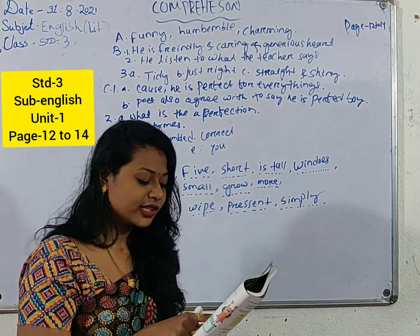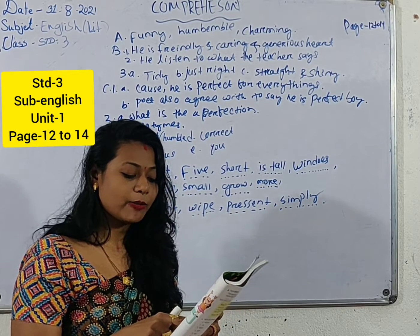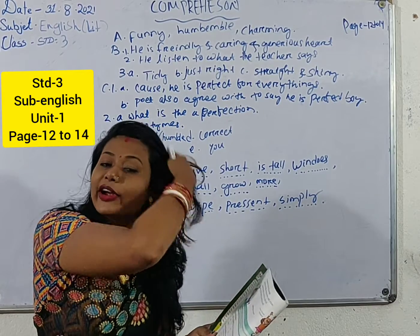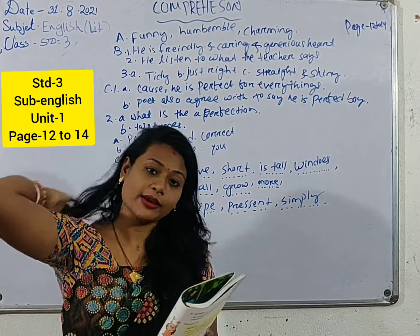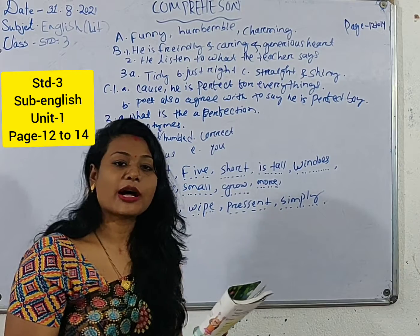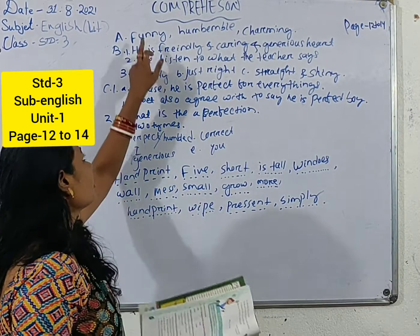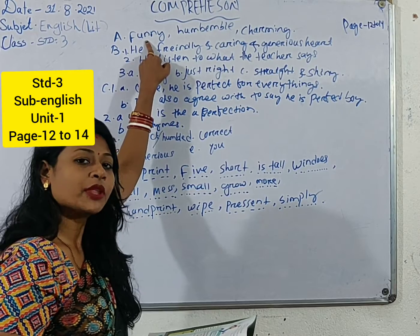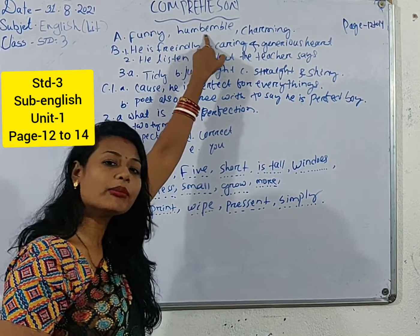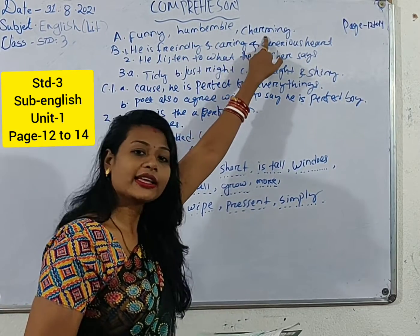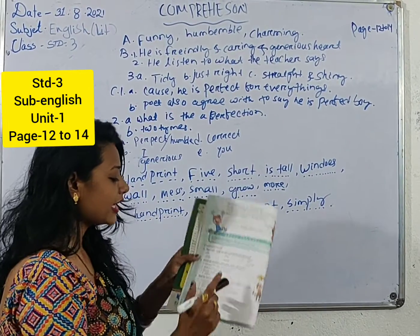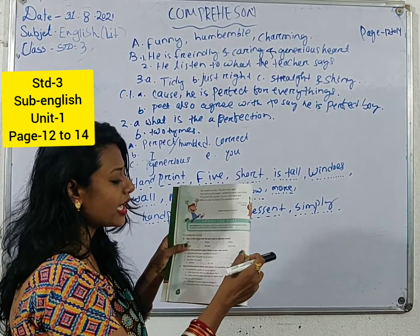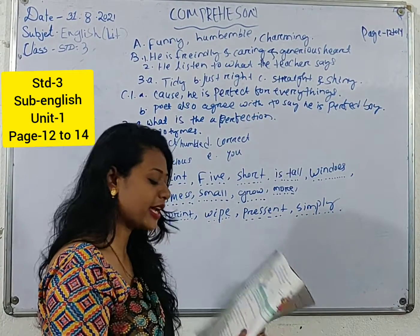The question is: tick the words that the poet used to describe himself. Those words which the poet has used to describe the boy, you have to tick them. Let's see — first, 'funny'; second, 'humble'; and third, 'charming'.